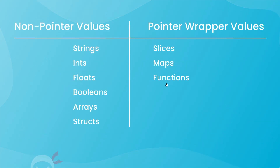In the last lesson we saw that some data types contain pointers to underlying data stored in another memory location. We call these pointer wrapper values, and this happens automatically whenever we create one of these data types. But we can also manually create pointers for other data types like strings, ints, and floats.